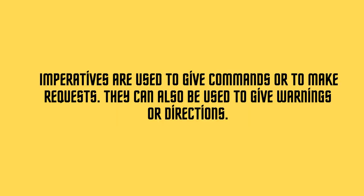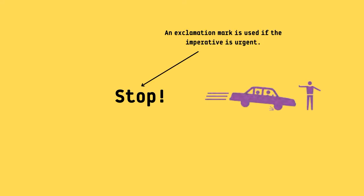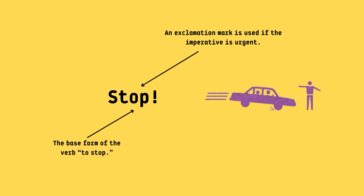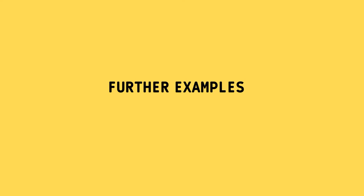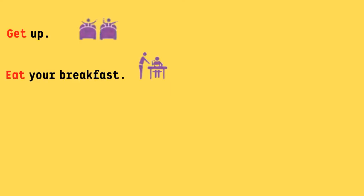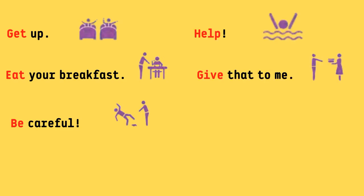Imperatives are used to give commands or to make requests. They can also be used to give warnings or directions. For example: Stop. An exclamation mark is used if the imperative is urgent, and the base form of the verb is used — to stop. Further examples: Get up. Eat your breakfast. Be careful. Help. Give that to me. Read this book.